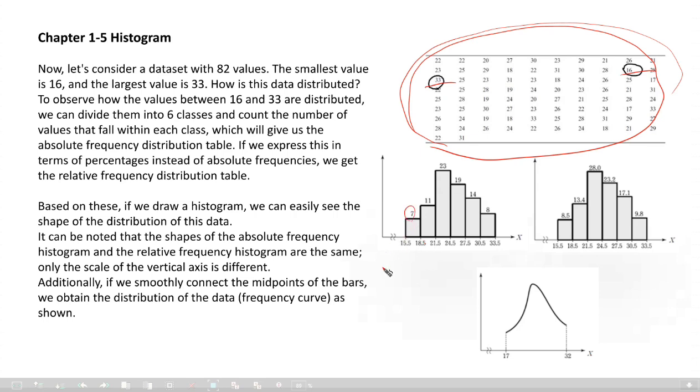So there are only 7 in this class, 11 in this one, 23, 19, 14, and 8 of them are located in these classes. So, divide them into six classes and count the number of values that fall within each class, which will give us the absolute frequency distribution table. Then we use this table and draw a histogram here.